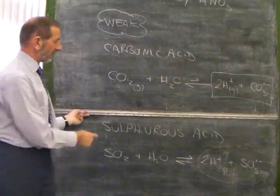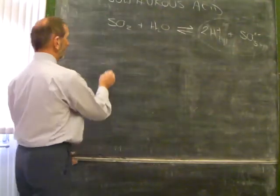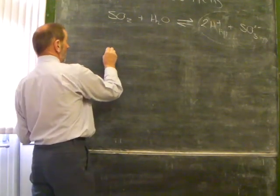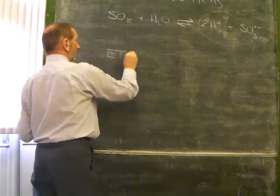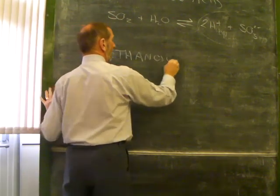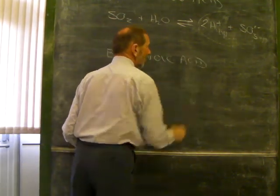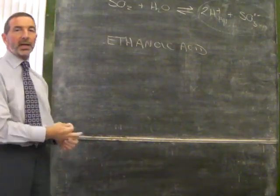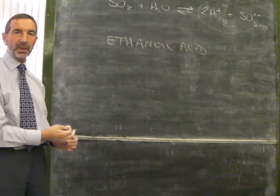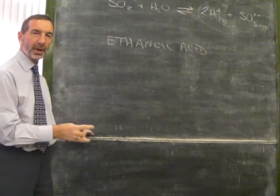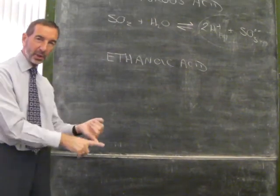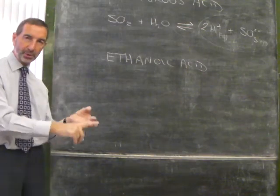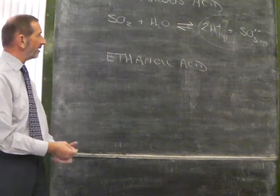And of the three weak acids. Carbonic. Sulfurous. The other one, which you're likely to come across, is ethanoic acid. Ethanoic acid. Of course, it follows that if ethanoic acid is a weak acid, other carboxylic acids will be weak as well. Remember, ethanoic is only one of a family. Methanoic, ethanoic, propanoic, butanoic, pentanoic. They'll all be very similar.